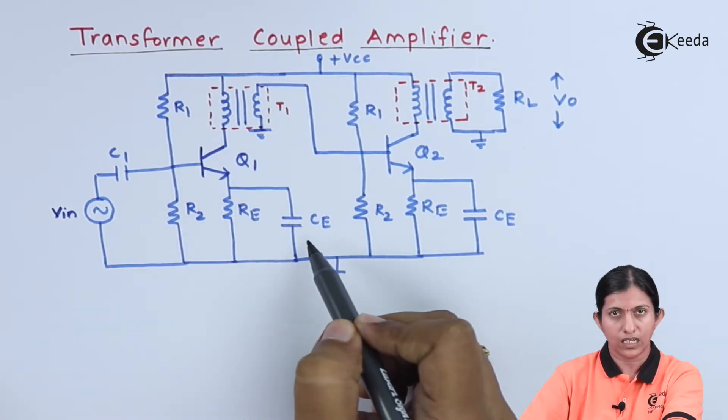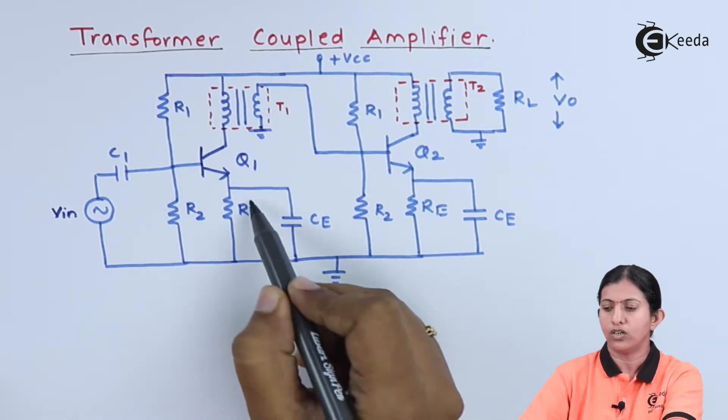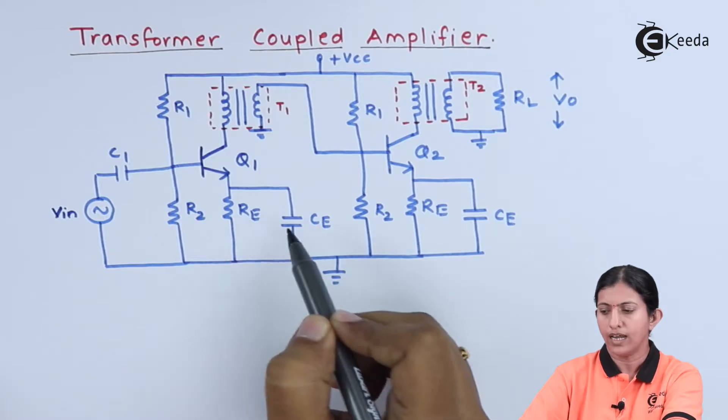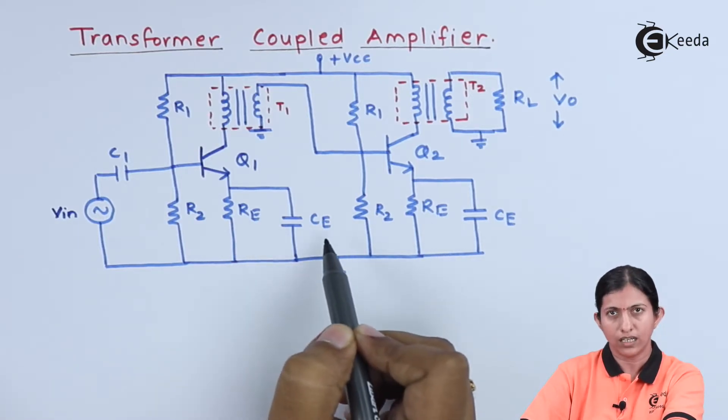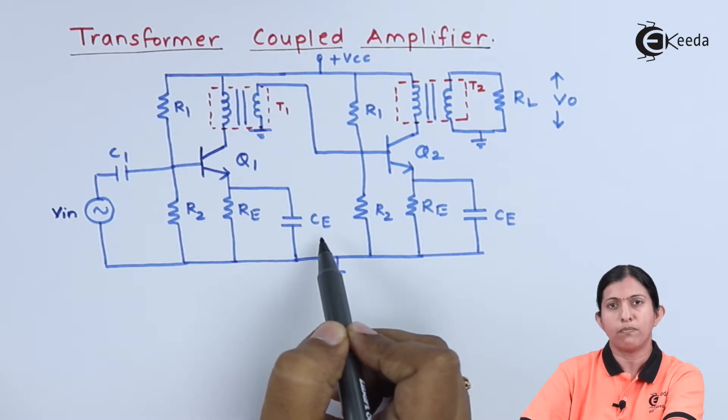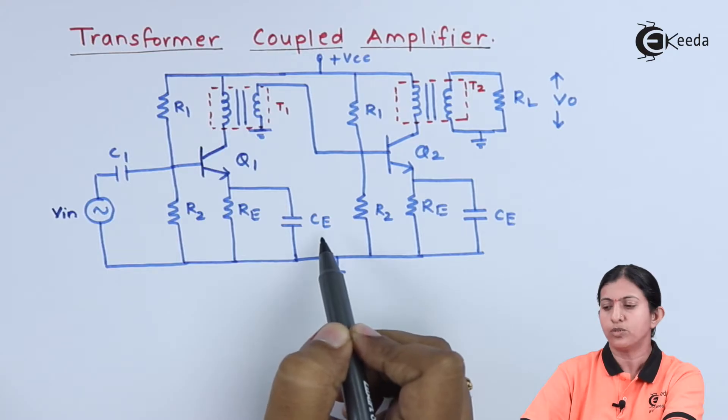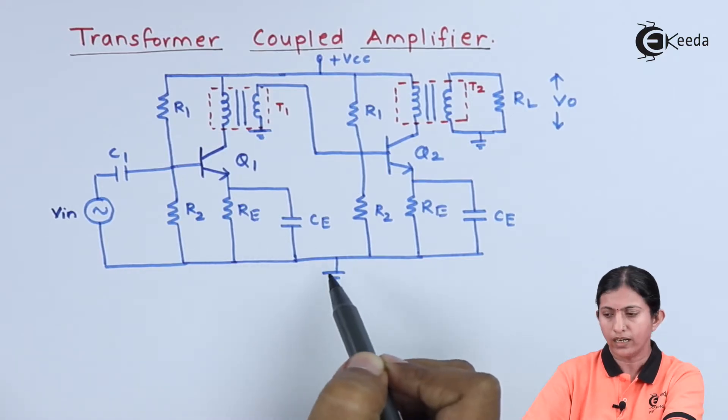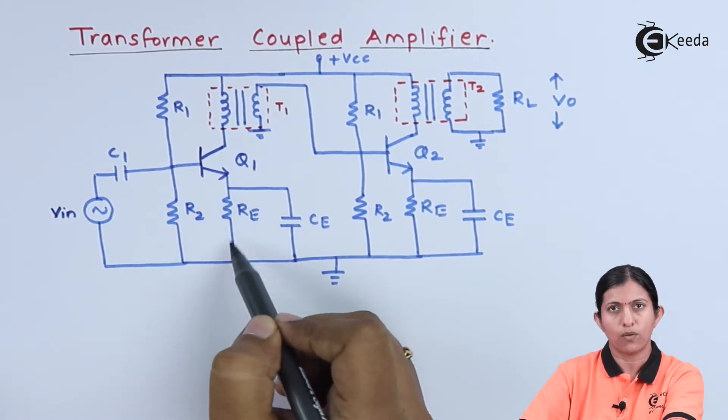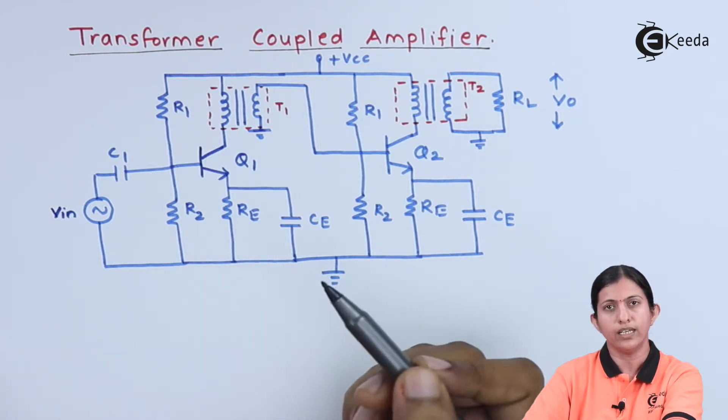Capacitor CE is connected across resistor RE at both stages. This capacitor CE acts as an emitter bypass capacitor, which bypasses the emitter current to ground so that there is less voltage drop across RE, and because of that, the voltage gain increases.